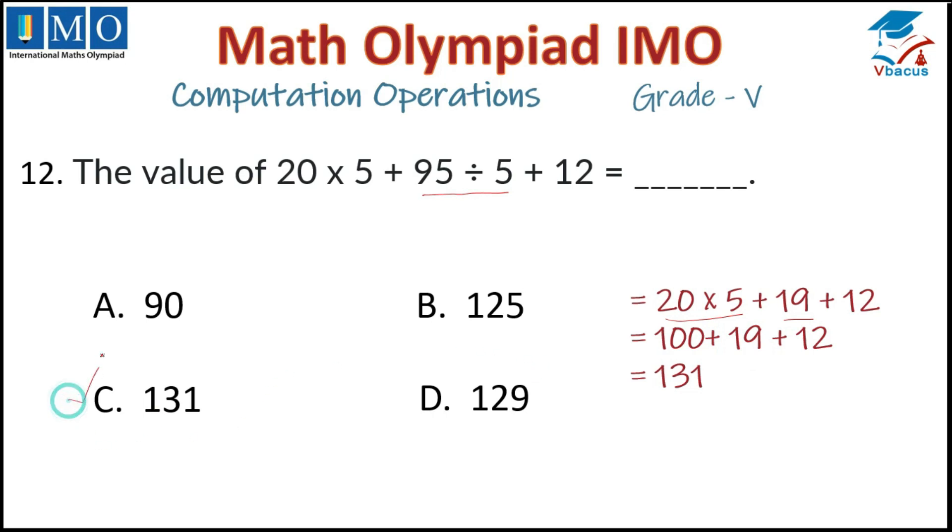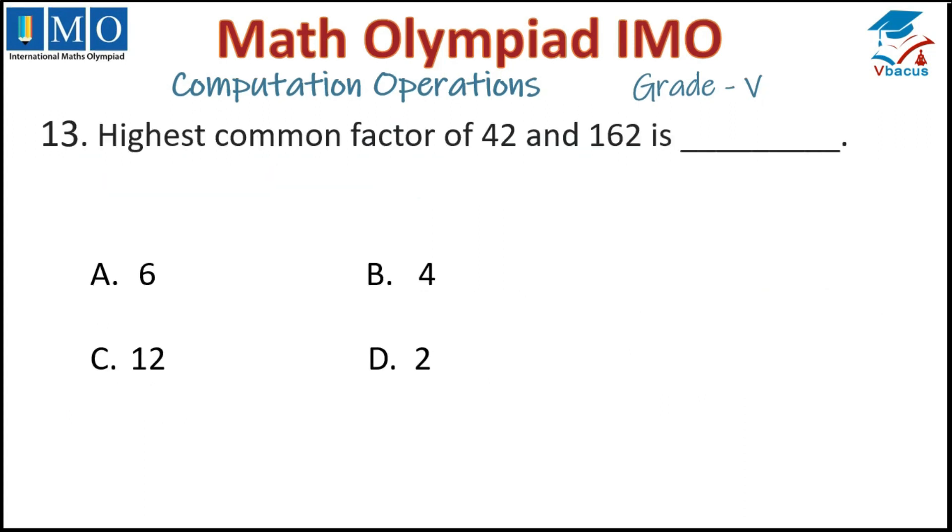Question number 13: The highest common factor of 42 and 162 is? Highest common factor means we have to find the HCF by division method.